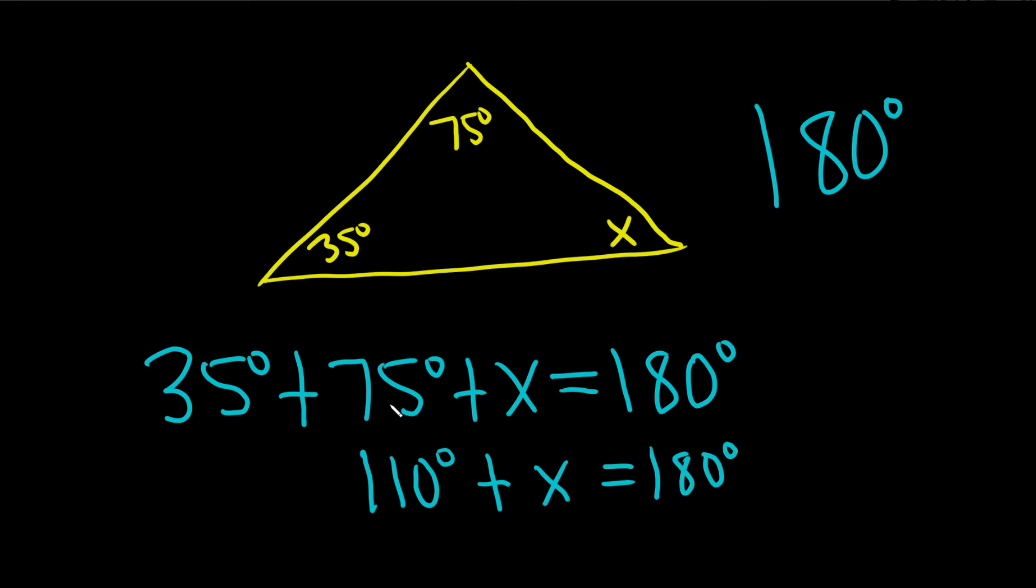If you're wondering how I added these so quickly, I did it like this. We have 35 plus 75. So I thought about the 5. 5 plus 75 is 80, and then you're left with 30. 30 plus 80 is 110, just some quick mental math.